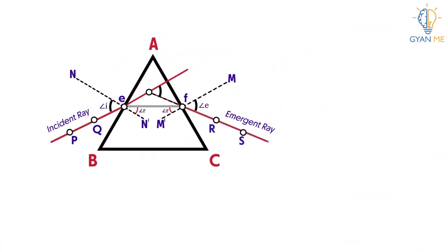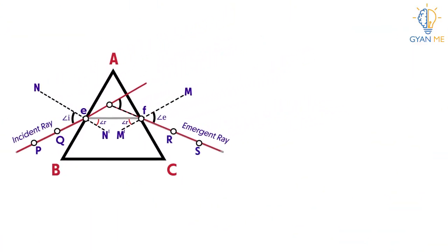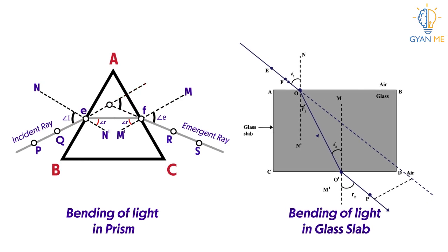Now compare the refraction of light through prism and the slab. Is the kind of bending that occurs in prism the same as that in glass slab? Pause the video, think about it and we will see you in the next video.